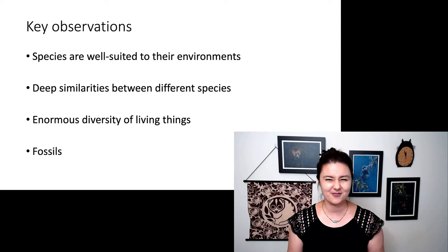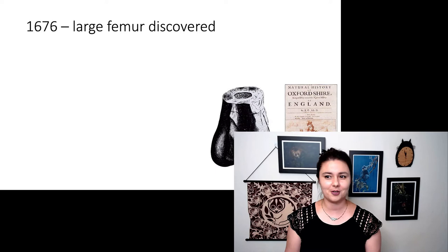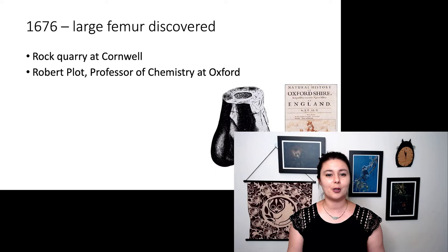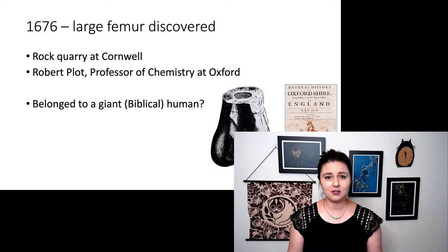First, in 1676, we discovered a large femur from a rock quarry in Cornwall. It was given to Robert Plot, the professor of chemistry at Oxford. At the time, they thought it was possibly a giant biblical human.